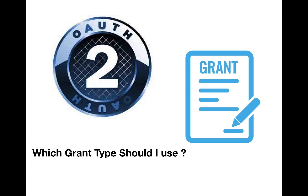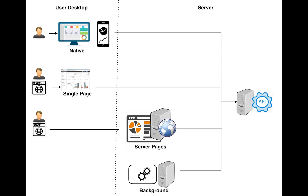Which grant type should I use? This depends on the kind of application you're building. Here I classified the applications into four categories: native, single page, server page, and background. Native apps are the ones which run on the desktop or on the phone of the user, like Android applications, iOS applications, WPF applications, Windows Forms, and Swing-based applications.